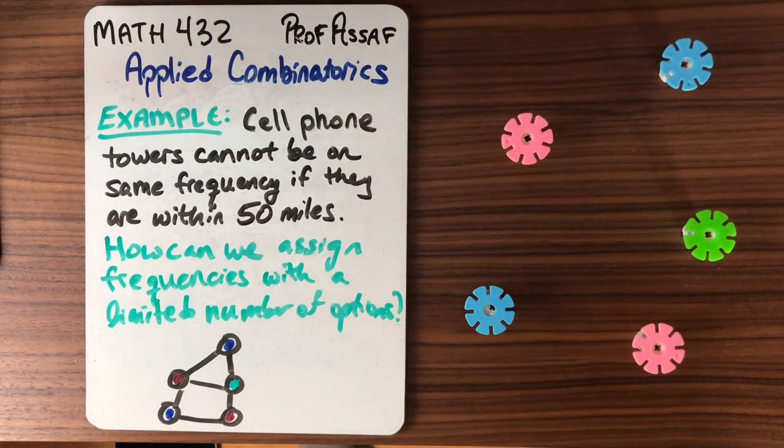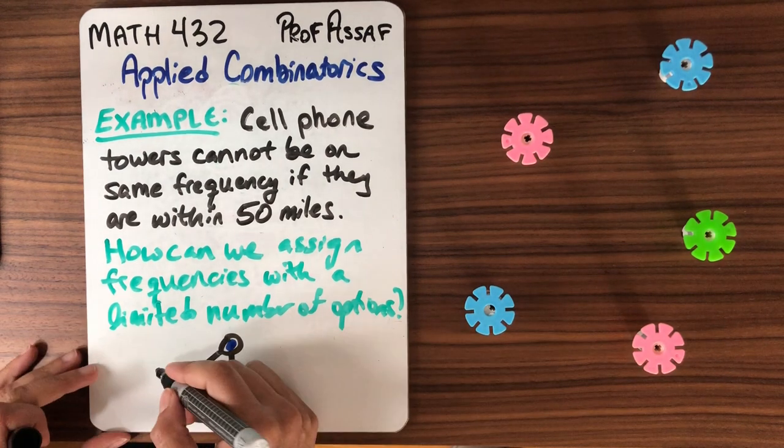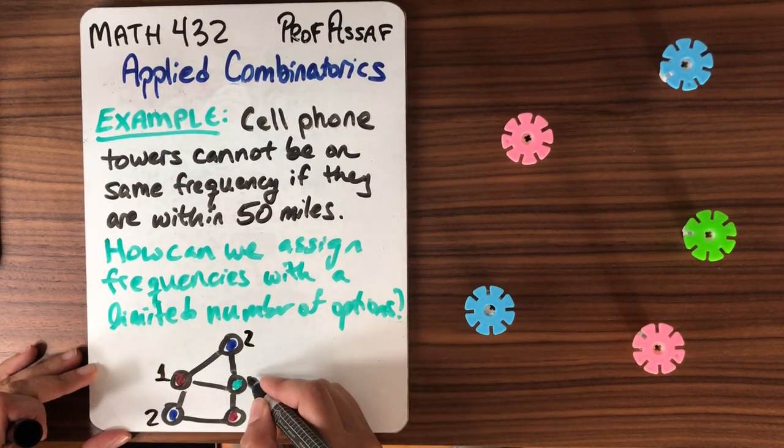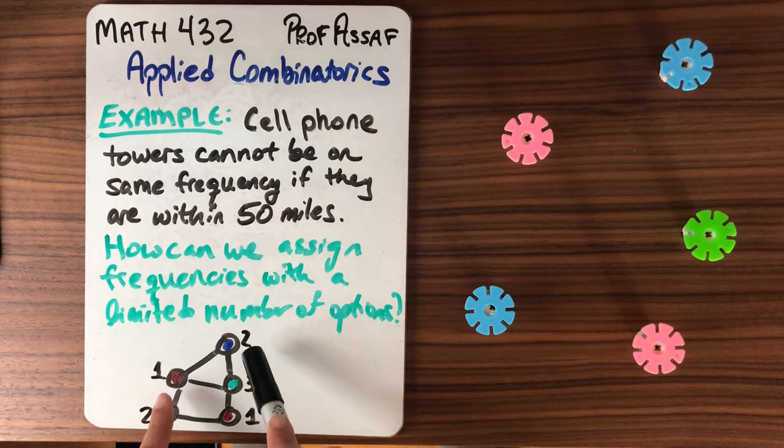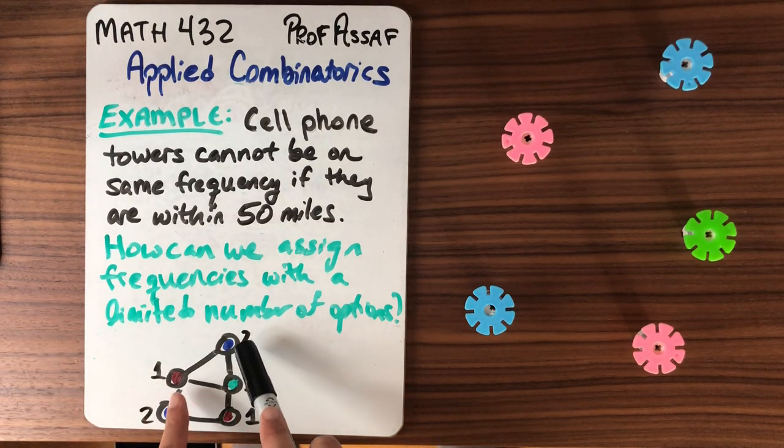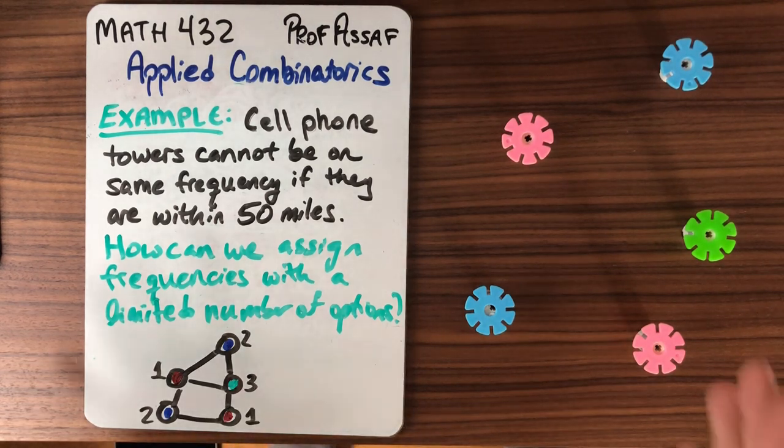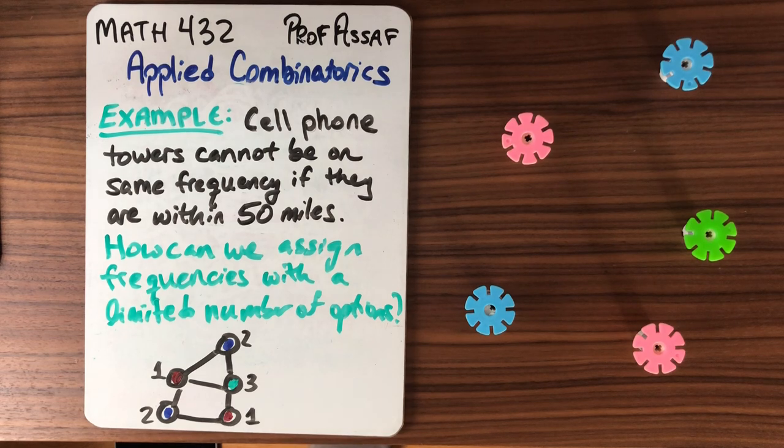Now when we're doing this mathematically, it's actually easier if we think of assigning numbers. So we could say pink is one, blue is two, and green is three. And what we want is that if any two vertices are connected by an edge they have to have different numbers. But it's a lot more exciting if we think of this as coloring, so we're going to keep the analogy of colorings, and that's really what it's called.